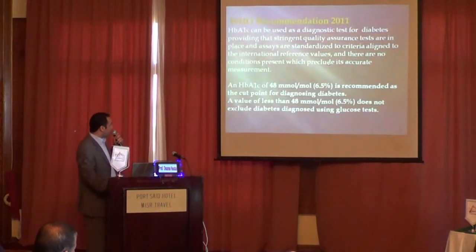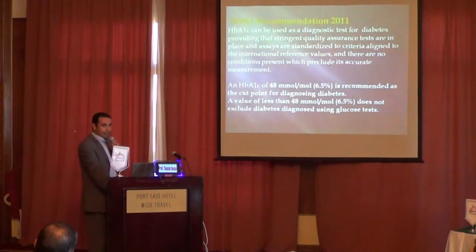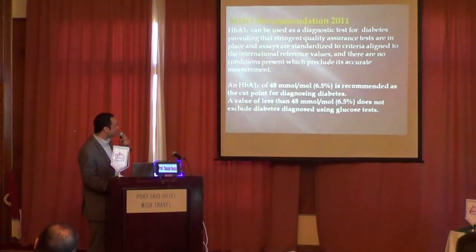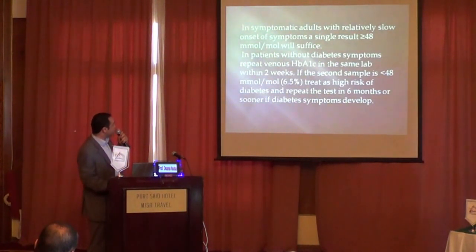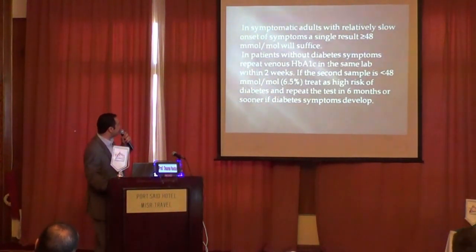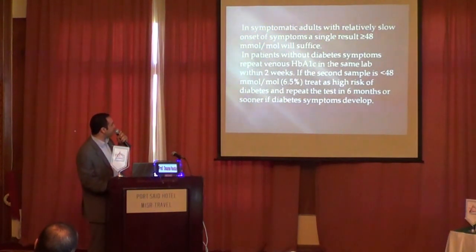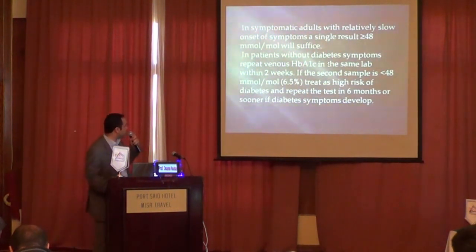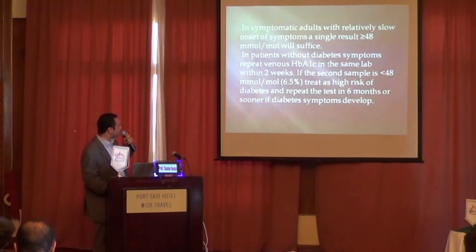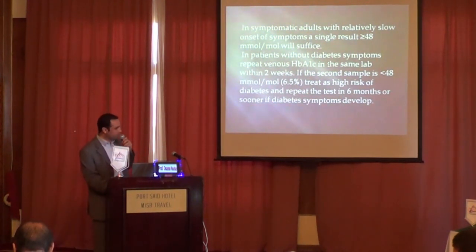The HbA1C cutpoint recommended is 48 mmol/mol (6.5%) for the diagnosis of diabetes. However, HbA1C below 48 mmol/mol does not exclude diabetes — it is a good positive test but not a good negative test. For a symptomatic patient, one positive test result is sufficient. For an asymptomatic patient with a result below 6.5%, the test should be repeated within two weeks with a second sample, and the patient kept under observation for six months, as they may develop diabetes symptoms later on.